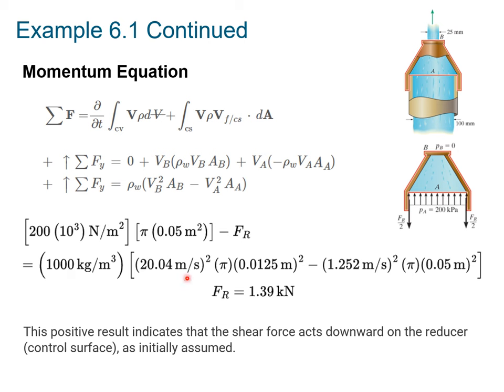And that has to equal this term here. So you can plug in the density. You can plug in the velocity and the areas. We know the areas because we're told here what they are. It's 100 millimeters and 25 millimeters, respectively. Those are the diameters. So you have those to get the radius. Pi R squared in each case. And the only unknown here is F of R. So you can solve for F of R, which is 1.39 kilonewtons. And notice it's positive.